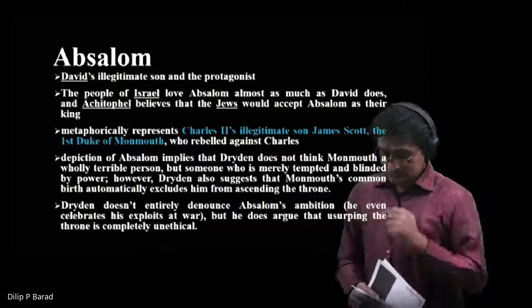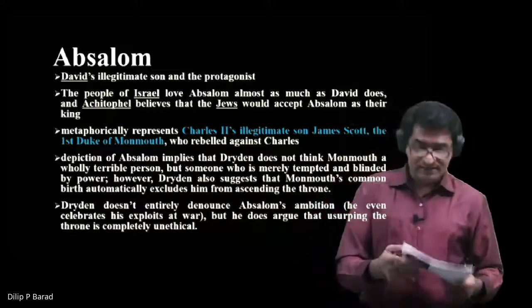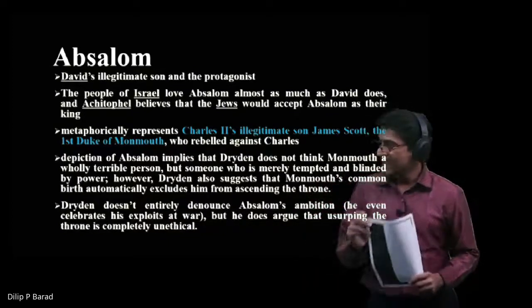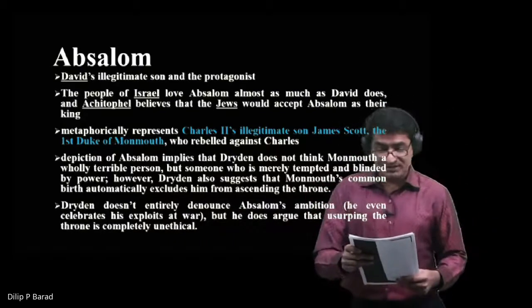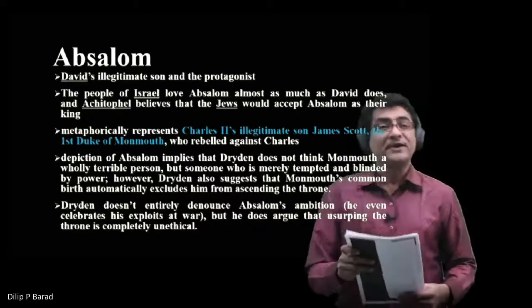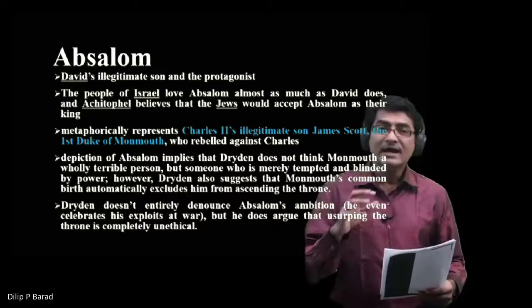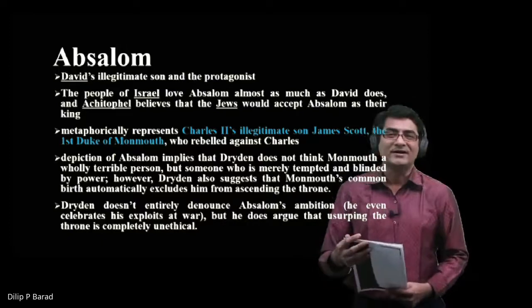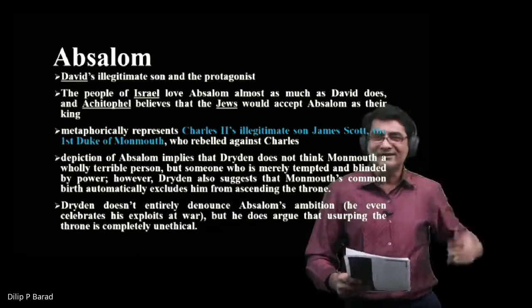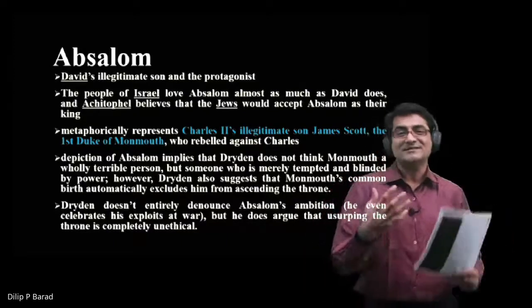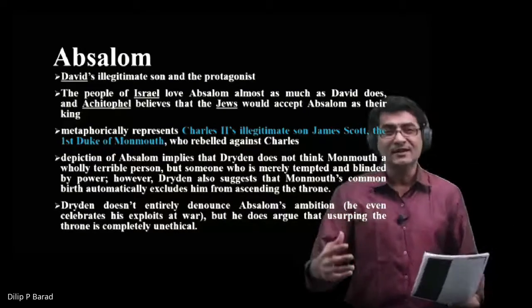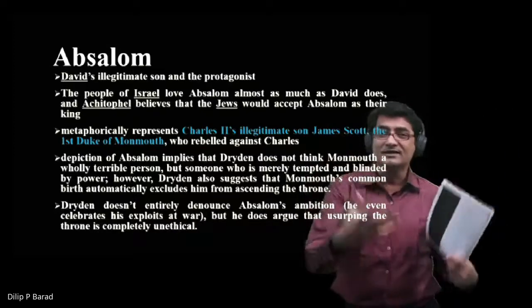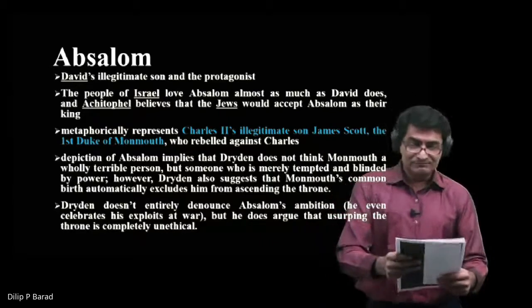The second important character is Absalom, the titular figure — David's illegitimate son and the protagonist. David does not have any legitimate heir to the throne, but Absalom is his favorite child. Absalom is handsome and ambitious; long hair is a sign of handsomeness, and Absalom has made himself a hero at war.